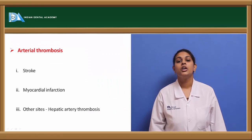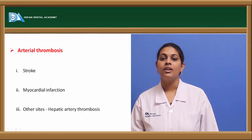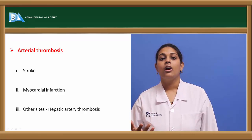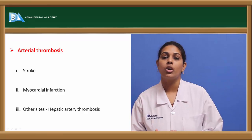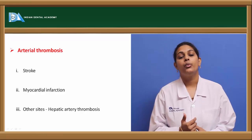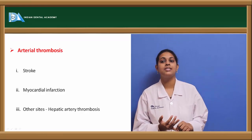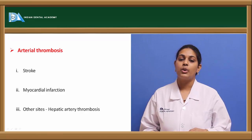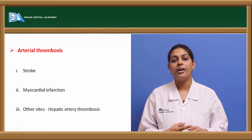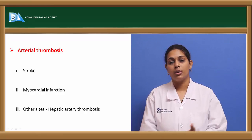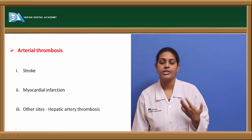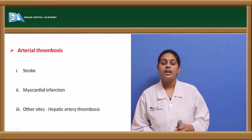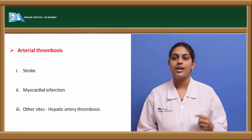Arterial thrombosis is characterized by stroke, seen in conditions like hypovolemia where there is disturbance in the normal blood flow to the brain. This may result in stroke, which can in turn cause myocardial infarction manifesting with chest pain and possibly sudden death. Since blood carries oxygen to the brain and other tissues, compromised blood flow results in compromised oxygen supply leading to myocardial infarction. If the hepatic or renal part is involved, it is known as hepatic artery thrombosis.